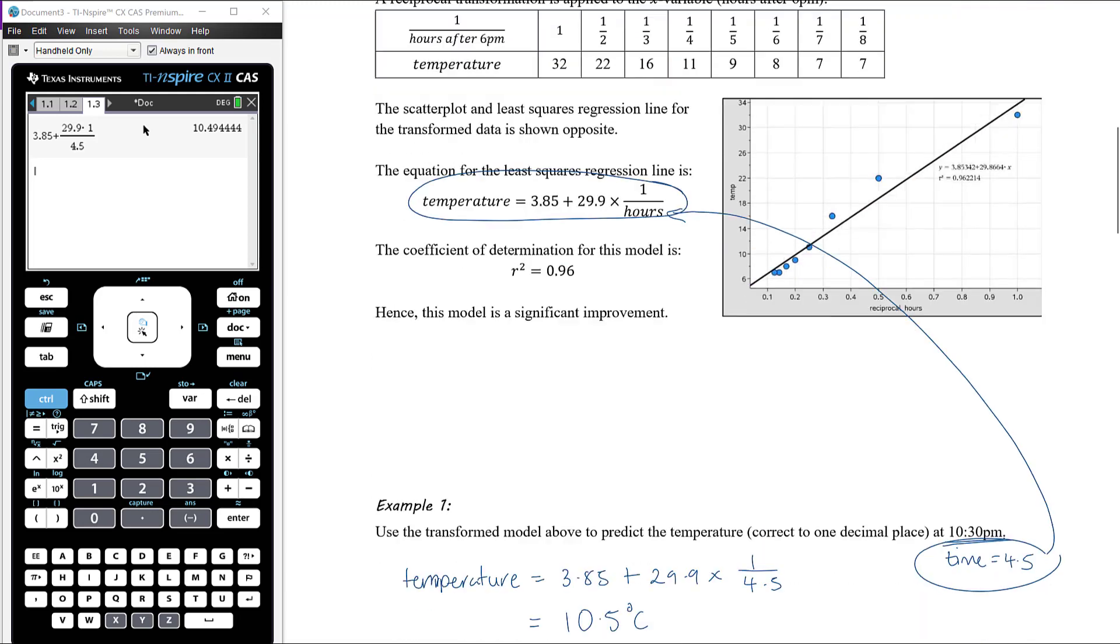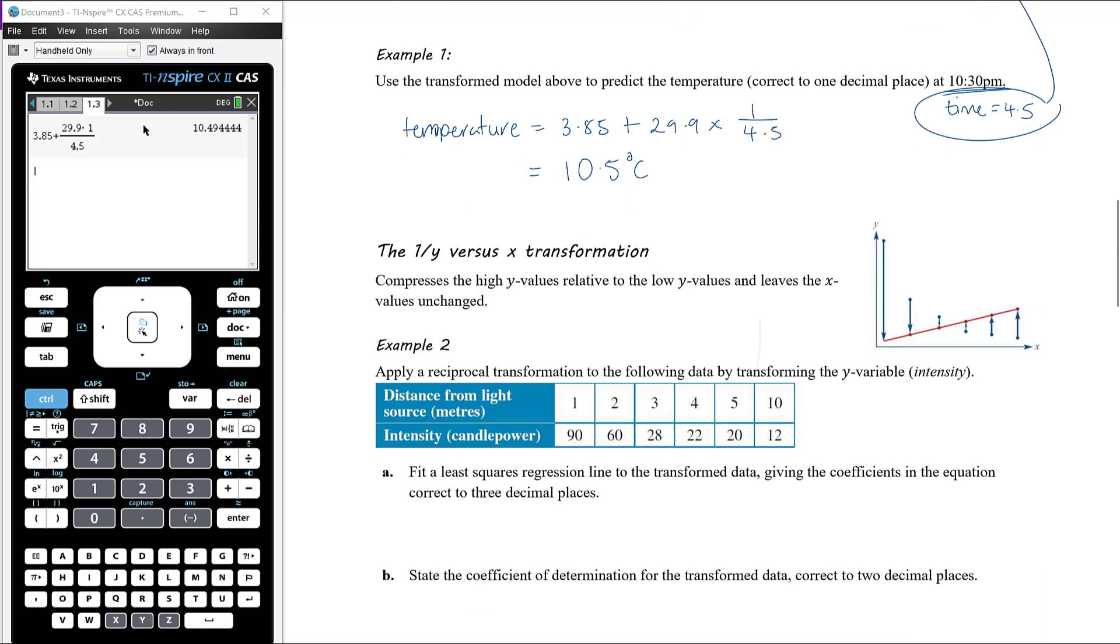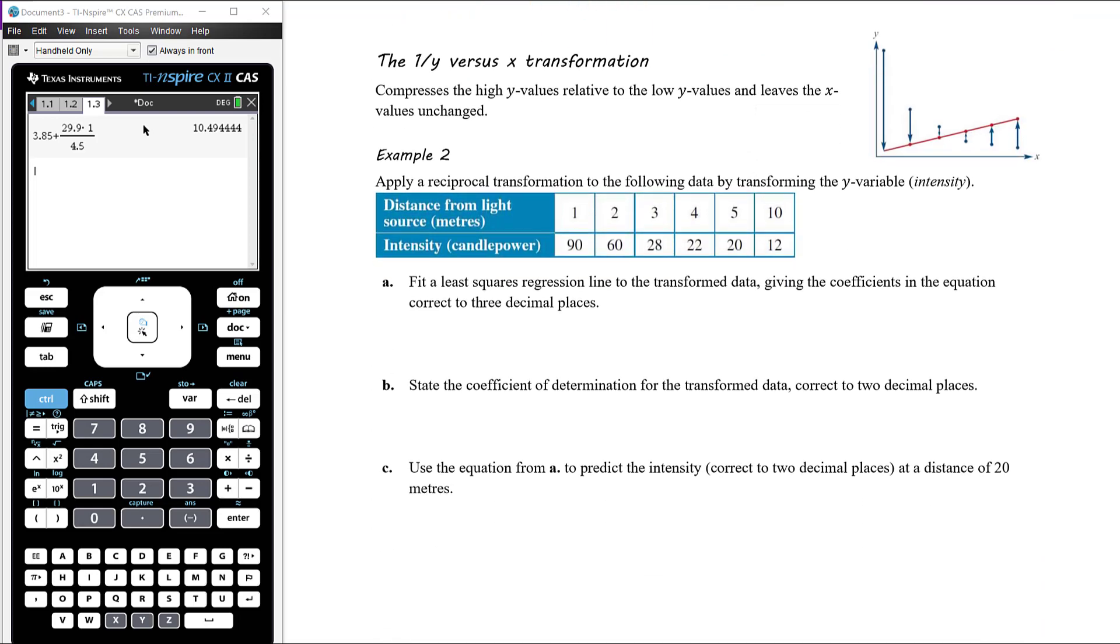Let's have a look at applying the transformation to the y variable, so 1 over y equals a plus bx. As I said, it's still a compressing transformation, but at the same time it will also flip things around. But that doesn't matter; that's catered for in the adjusted equation, and we're still talking about the same variable.